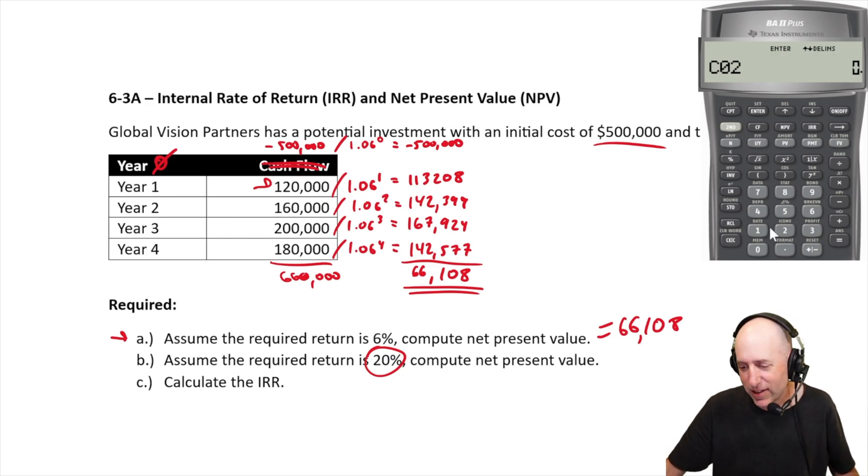The frequency was 1. Cash flow at time 2. 1, 60, 1, 60. I hit enter.